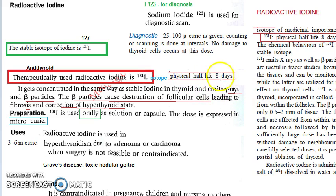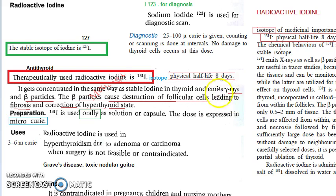Iodine 131 has a half-life of 8 days. How does radioactive iodine act as an antithyroid drug? It is absorbed the same way as normal iodine into the thyroid gland, entering the follicle cells and the colloid, and then it starts emitting gamma rays and beta particles.